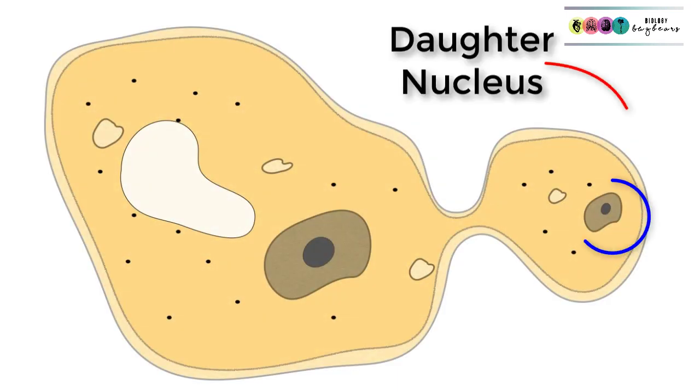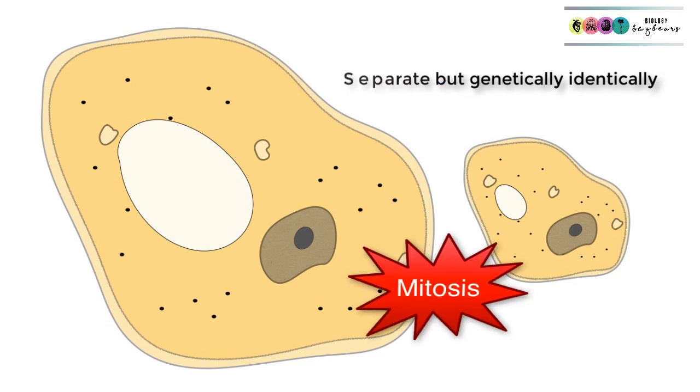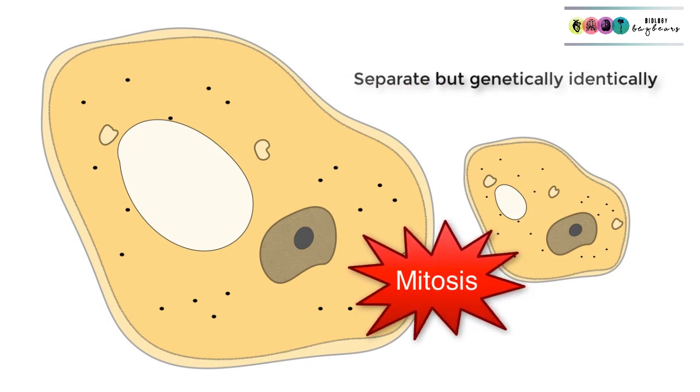At the end of mitosis, a daughter nucleus moves into the bud and this will either nip off into its own separate yeast cell as is shown in this diagram. Remember these are two separate yeast cells but they're genetically identical because they were formed by mitosis.